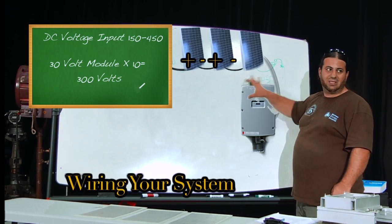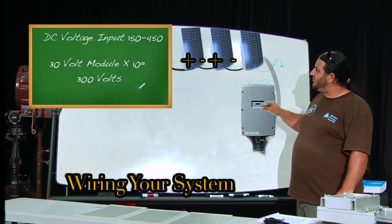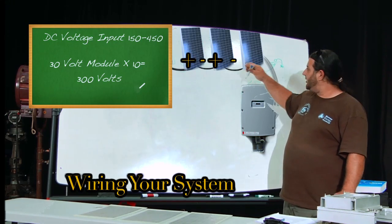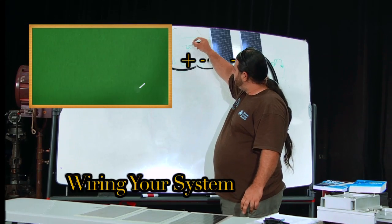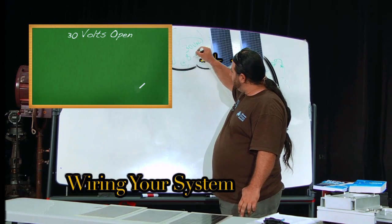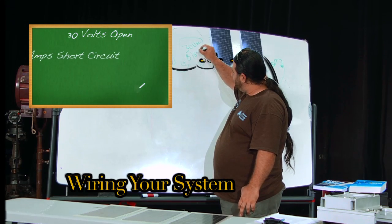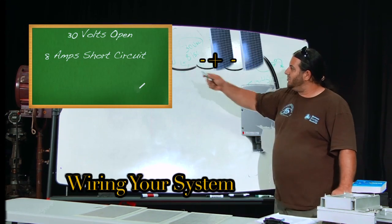Now whatever the current of those modules are, let's say that module itself was 30 volts open circuit and eight short circuit amps or current. Now when you wire them in series, you've added up the voltage.